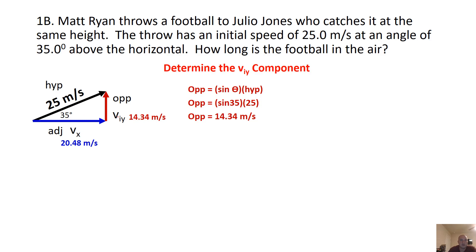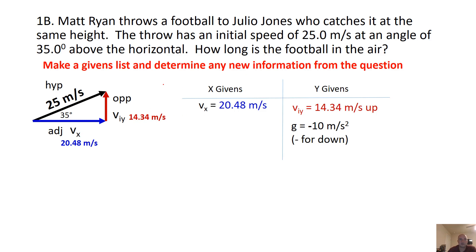Now we have our triangle done with our initial Y and our constant X, and we can make a givens list with all the information for any question involving this material. We have VX staying the same, an initial VY, and since it's going to be in the air, acceleration due to gravity is going to be negative 10. We're calling up positive and down negative. Left and right we're not concerned with — we'll just talk about forward.